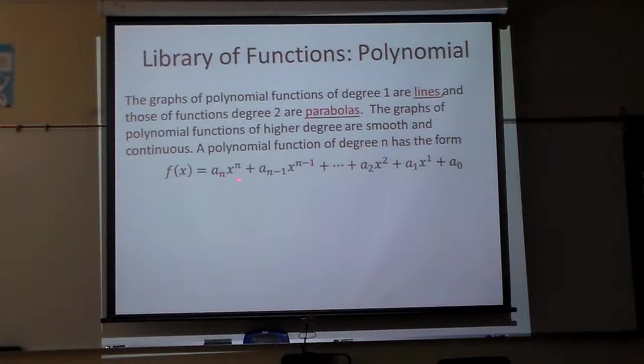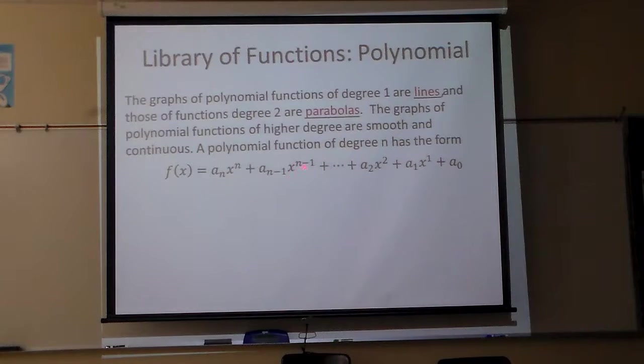And you'll see them written a lot like this here. It'll be some number, x to the n power. Then you'll have another term, n minus one term. Usually the exponent can go down, and you can skip some, hence, and usually sometimes you have the last term there with not an x in it. That is the definition of a polynomial function.